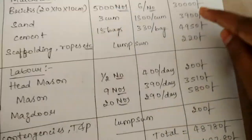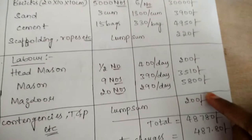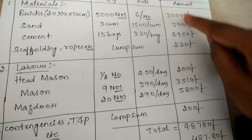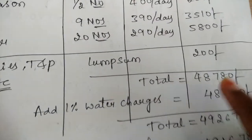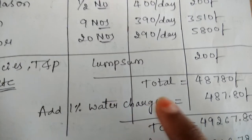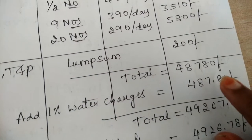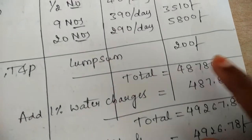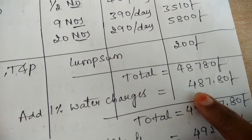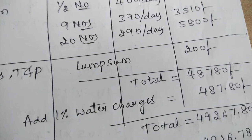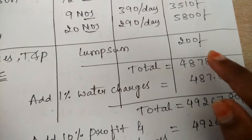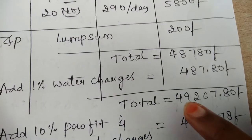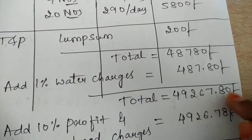After finding all the amounts, we add all the amounts at the end. On adding all these values, you get a total amount of 48,780 rupees. After getting the total amount, we add 1 percent water charges. One percent of this amount gives 487 rupees 80 paise. On adding these two amounts, you get a new total of 49,267 rupees 80 paise.